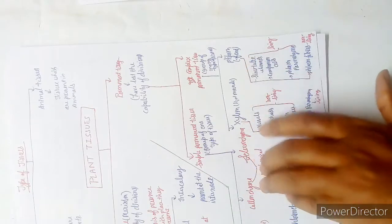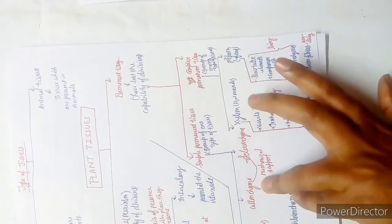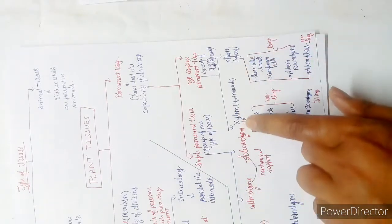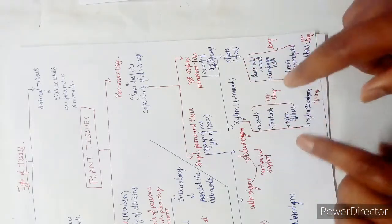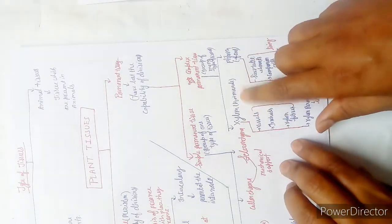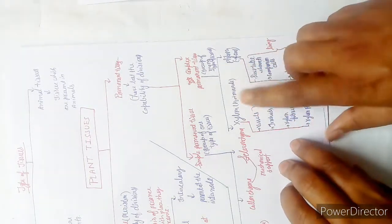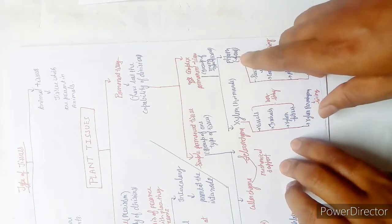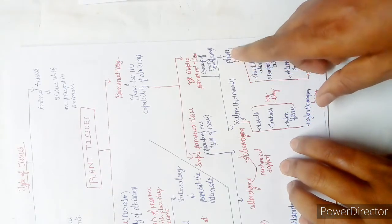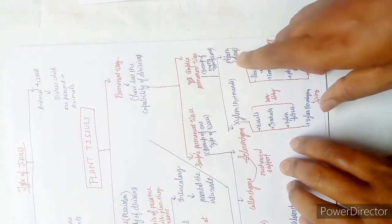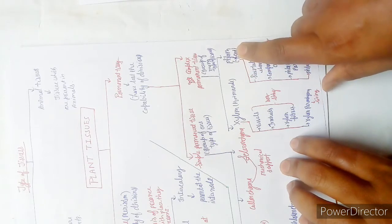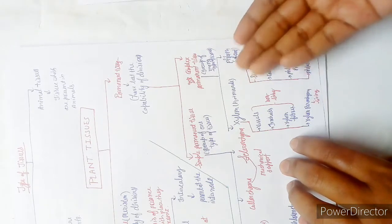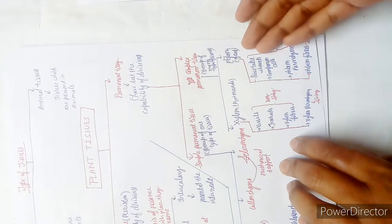Complex permanent tissues are of two types: xylem and phloem. Xylem conducts water and minerals. Phloem conducts food. Food is synthesized in the leaves and then transported through phloem.